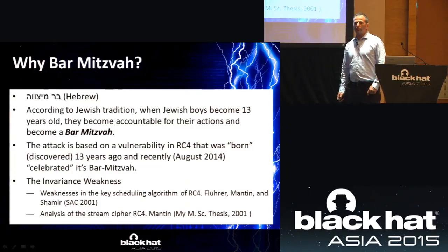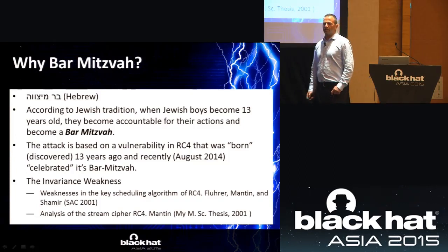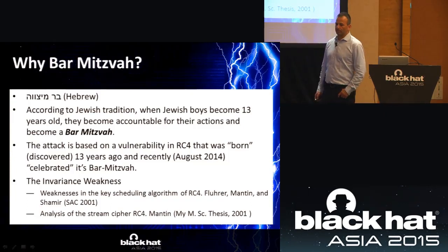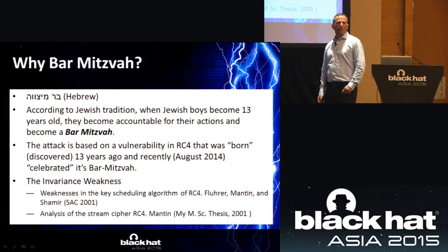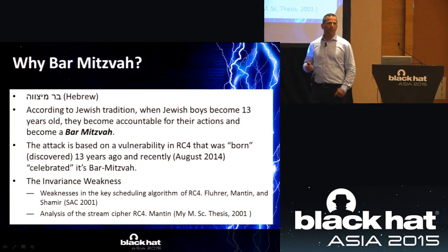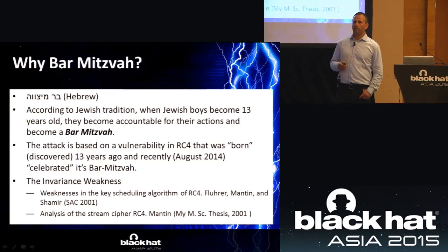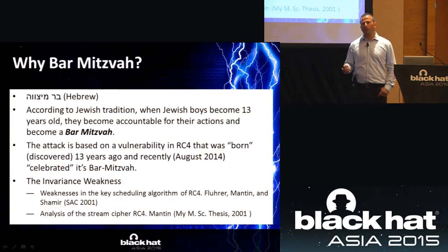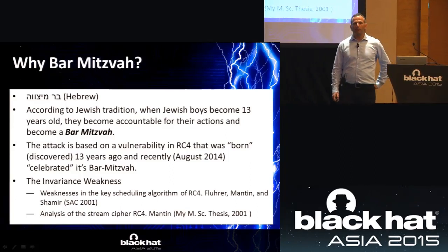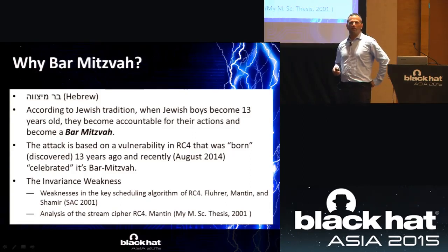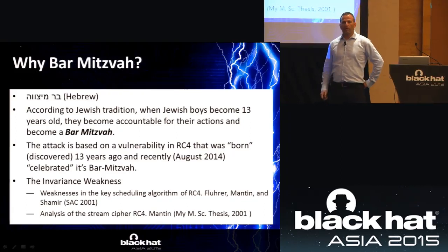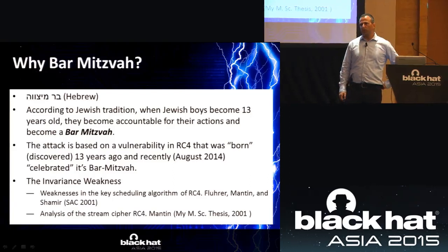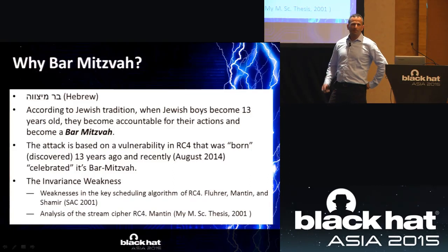So what is Bar Mitzvah and why Bar Mitzvah? According to Jewish tradition, when a boy becomes 13, he becomes accountable for his actions — it's a Jewish ceremony. The attack is based on the discovery of a weakness in RC4, which I participated in researching, and which was done 13 years ago. The weakness I'm talking about is called the invariance weakness. It was first published in the FMS paper, which I published with Scott Fluhrer from Cisco and Adi Shamir from the Weizmann Institute back in 2001, and it was also part of my master's research.